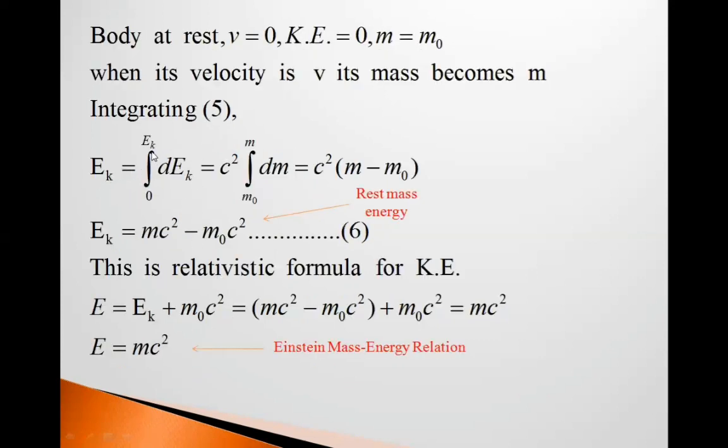Integrating this equation 5, we get Ek is equal to integration from 0 to Ek of dEk, which is equal to c square outside integration. So m0 to m integration of dm is equal to c square. This dm means m. Now taking, putting upper and lower limits, we get c square into m minus m0. So Ek is equal to mc square minus m0 c square. This is equation 6.